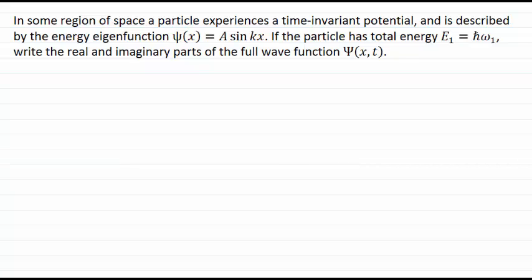What you should have been able to determine is we've been given for a particle with a time-invariant potential, its energy eigenfunction here, which is the term we use to refer to the spatial dependent component of its wave function there, lower case psi. We're also told the particle has a particular energy associated with this energy eigenfunction, given here in this case written as h bar times omega 1.